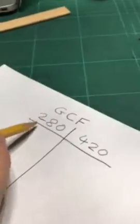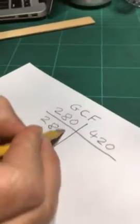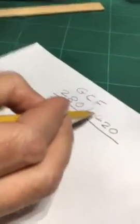We bring down the smallest number, 280, and then we find the difference between these two numbers, which is 140.